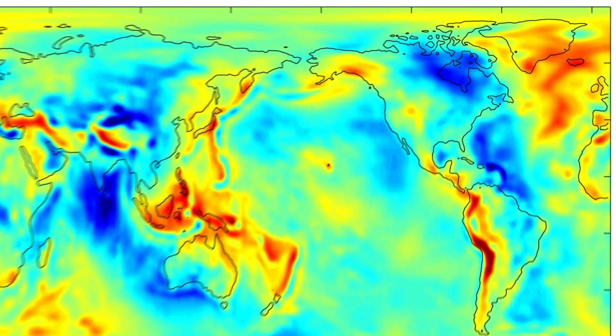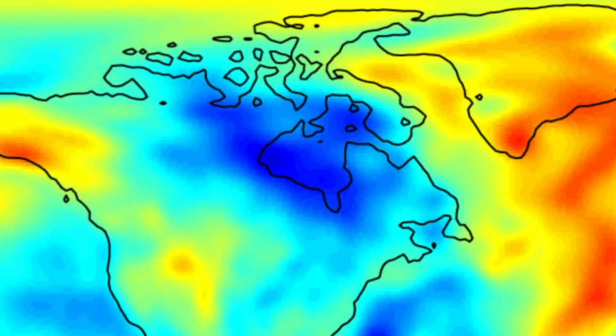So here are the two theories on why the Hudson Bay is missing gravity. The first has to do with what's called convection.